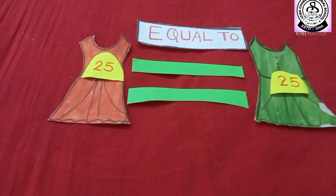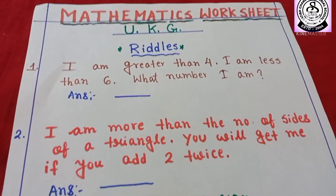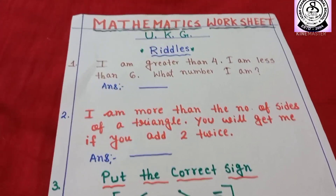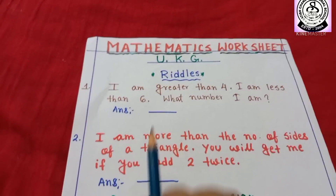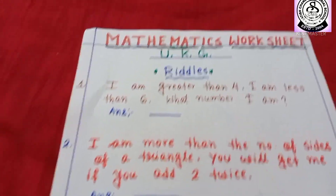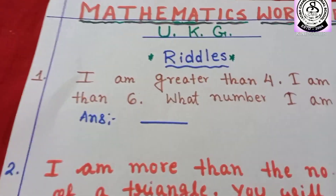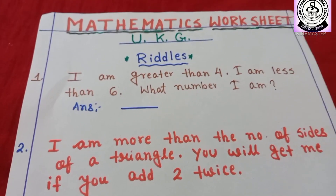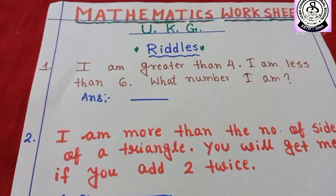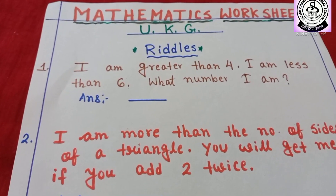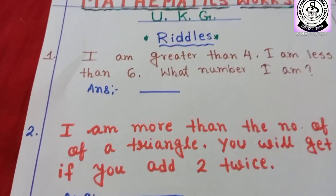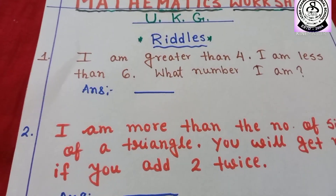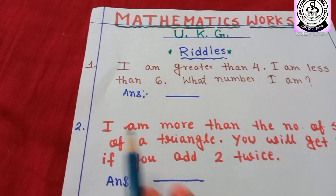Let's start. First, I am going to solve this paper. For the heading, I have written 'Riddles.' What is the meaning of riddles? Yes — brain exercise game. That means you have to apply your common sense. So, number 1.